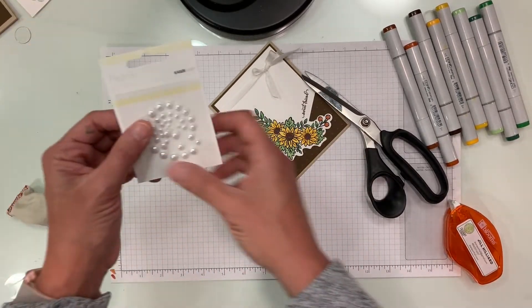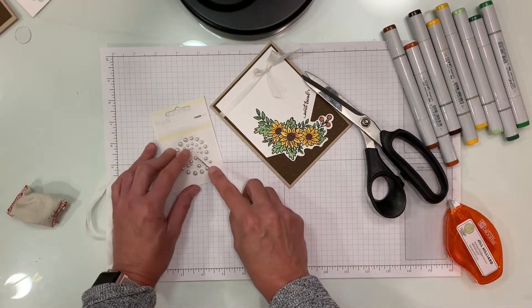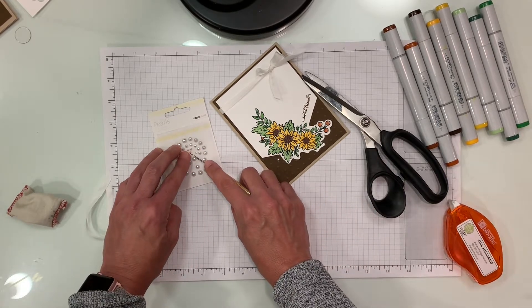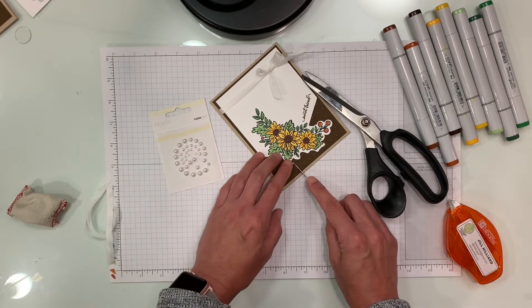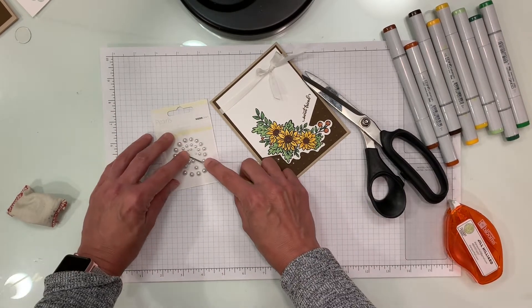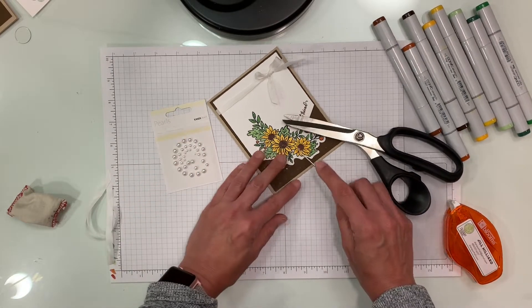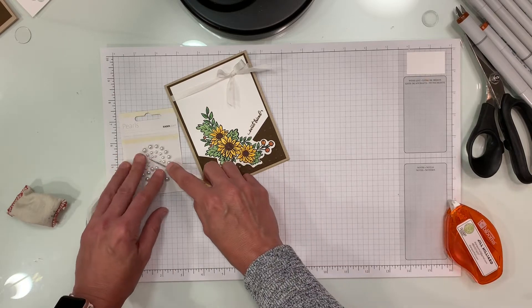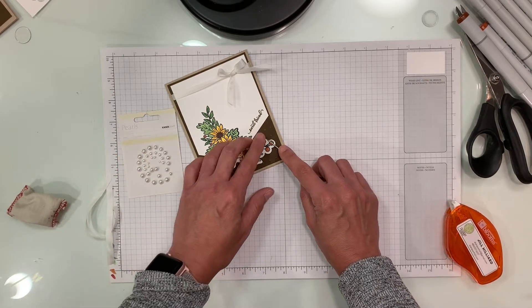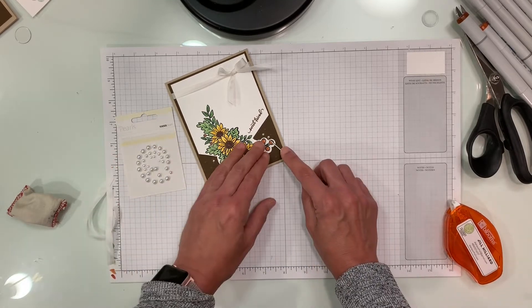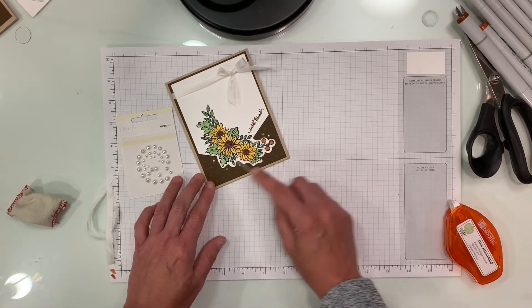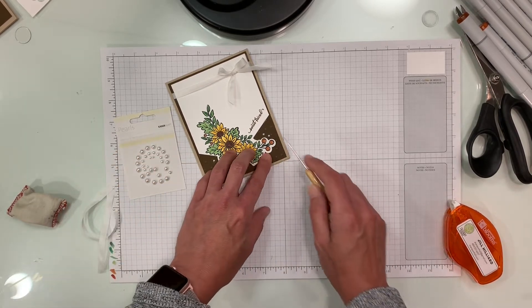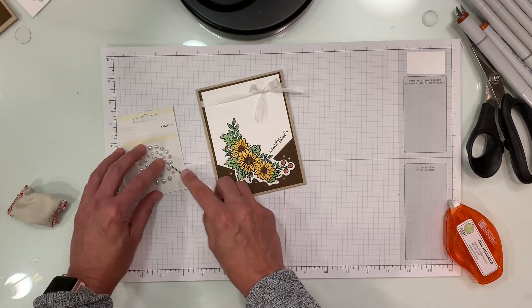So now all we have to do is add some pearls. I have a pokey tool and I literally just kind of scattered the little ones around the bottom. So they popped off the cardstock here. A couple here and a few little ones over here. I always try to do an odd number so that's five. I don't know why I like odd numbers.